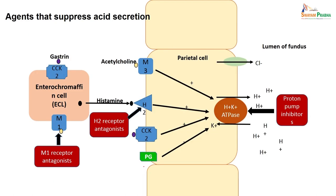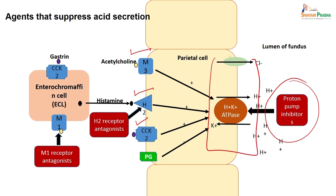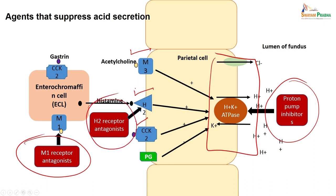Coming back to how drugs act: there are cholinergic muscarinic receptors, histamine H2 receptors, cholecystokinin receptors, and prostaglandin. Proton pump inhibitors are the most effective because they block the last common step. You can also give muscarinic receptor antagonists or H2 receptor antagonists. If you understand this, you have understood the modality of treatment for peptic ulcer.